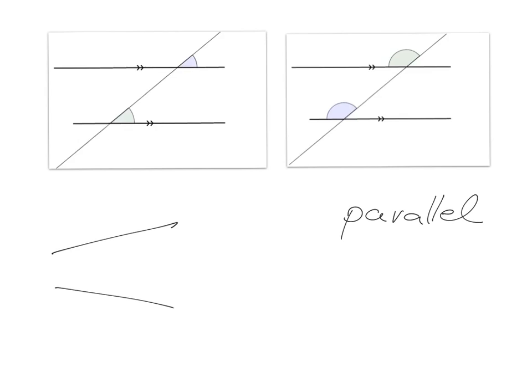Parallel lines are indicated by a little arrow like that, or you could say, for example, a double arrow. That just indicates that the lines are parallel.